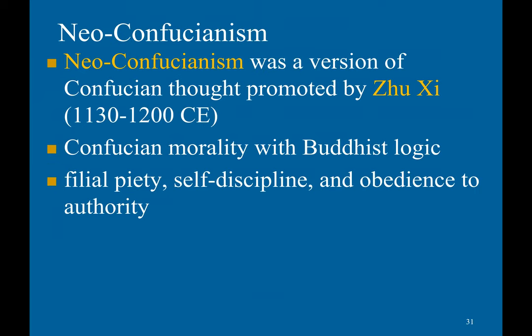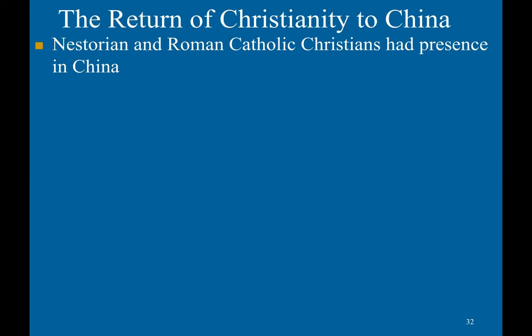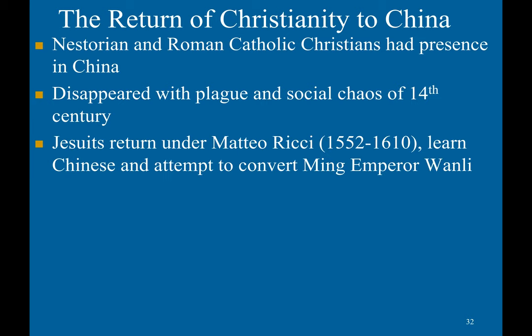Neo-Confucianism was a version of Confucian thought promoted by Zhu Xi — basically a syncretism of Confucian morality with Buddhist logic. It emphasized filial piety, self-discipline, and obedience to authority. Earlier, Roman Catholic Christians had a presence in China, but it disappeared with the plague and social chaos of the 14th century.